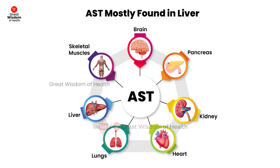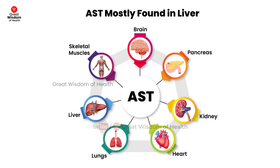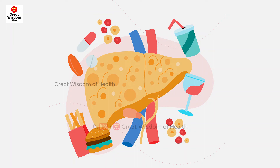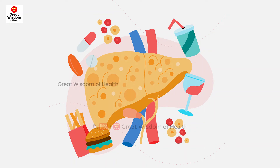When cells that contain AST are damaged, they release the AST enzyme into your blood. When you need to check the liver condition, an ALT or AST blood test is very necessary, as these tests signify the condition of the liver or liver damage.